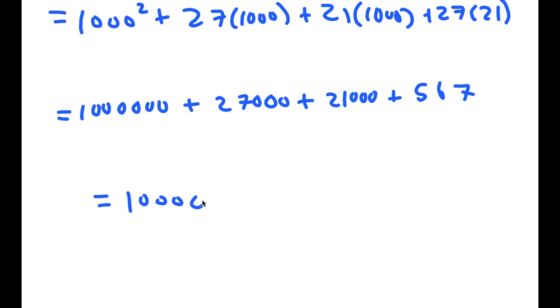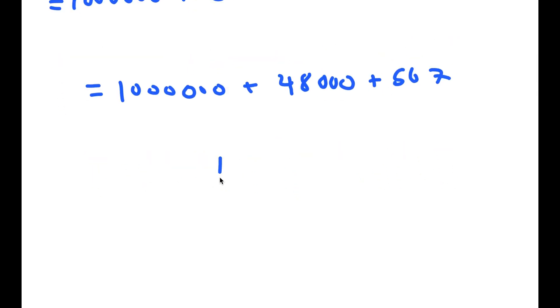And this is equal to 1,000,000 plus 48,000 plus 567, which is equal to 1,048,567. So this is my answer.